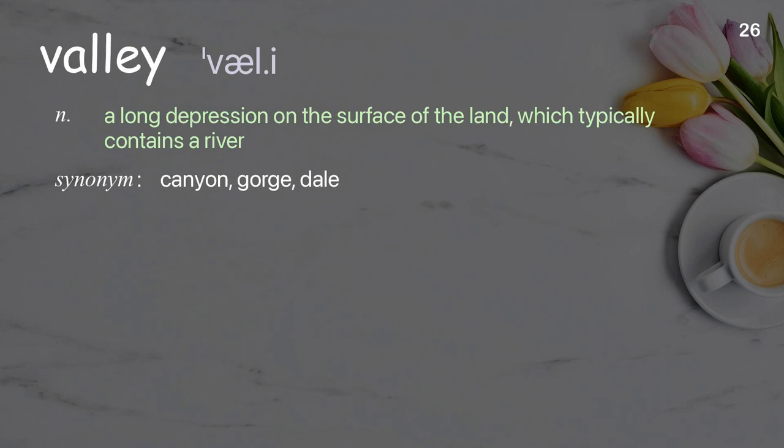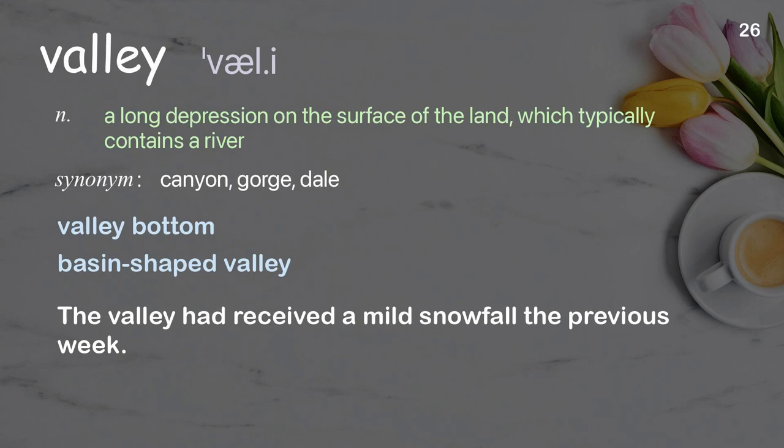Valley: A long depression on the surface of the land, which typically contains a river. Examples: valley bottom, basin-shaped valley. The valley had received a mild snowfall the previous week.